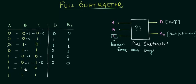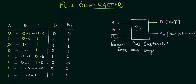1 minus 1 minus 0 gives difference 0 and borrow 0. For 1 minus 1 minus 1: 1 minus 1 is 0, then 0 minus 1 requires a borrow, making it 2, so 2 minus 1 is 1 — borrow is 1 and difference is 1. So the difference column is 0,1,1,0,1,0,0,1 and the borrow column is 0,1,1,1,0,0,0,1.